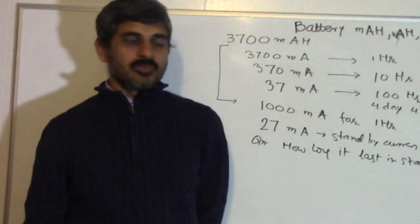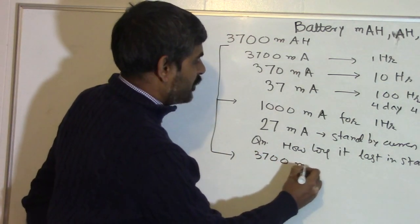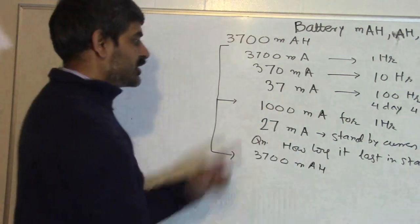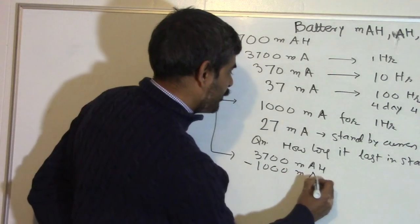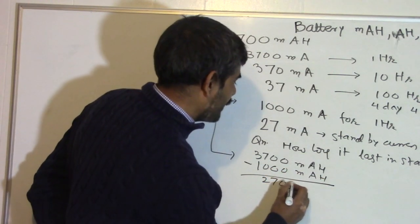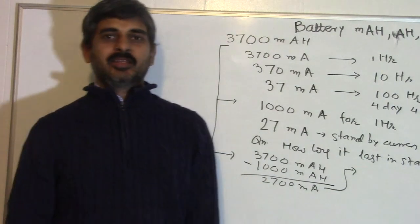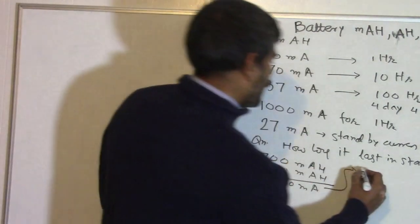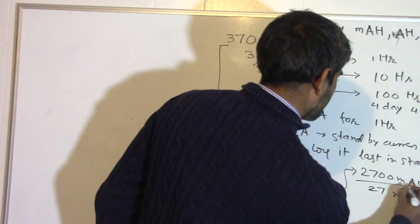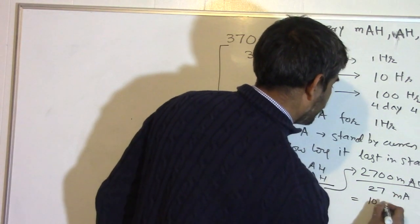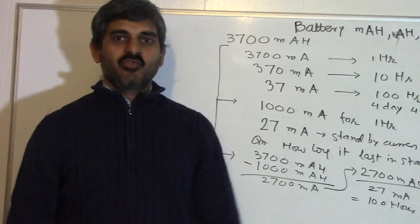So how do we calculate this? We initially had 3700 milliampere hour, and out of this, we used 1000 milliampere hour for one hour. So I used up 1000 milliampere hour and am left with only 2700 milliampere hour. Now, I am taking 27 milliampere in standby. So the number of hours will be 2700 milliampere hour divided by 27 milliampere, which equals 100 hours. You will have a standby life of about a little more than 4 days.